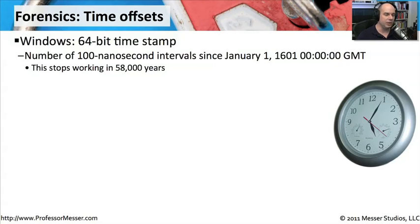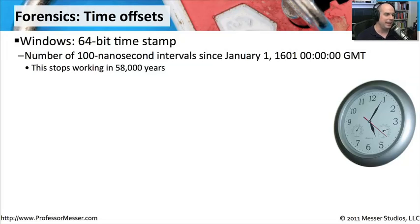One of the things we want to look at are the offsets of time. In the Windows operating system, Windows uses a 64-bit timestamp. It's a timestamp that counts the number of 100-nanosecond intervals that have occurred since January 1st of the year 1601 at 0000 GMT.